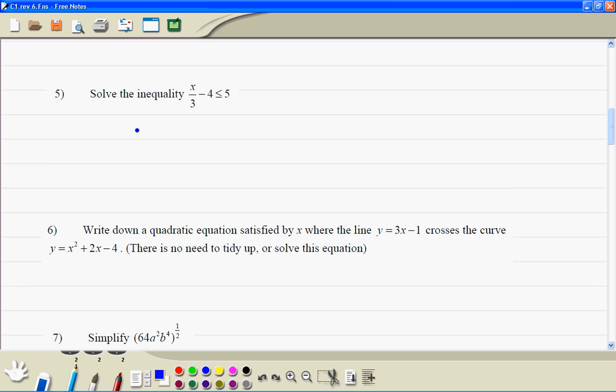Number 5, first you add 4 on both sides, so we get x divided by 3 is equal to, or less than, 9. When you times both sides by 3, we get x is less than, or equal to, 27.